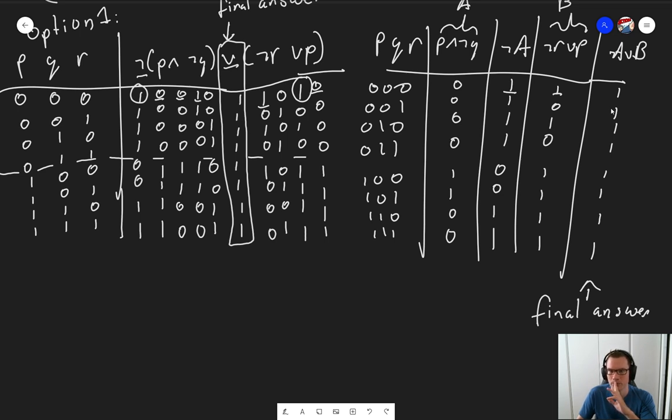So this is how you make truth tables for slightly bigger propositions than just P and Q. If you want to practice with this, there's plenty of opportunity in the course to do so. Both in the homework and outside of it. And I hope to see you around for the next video. Bye for now.